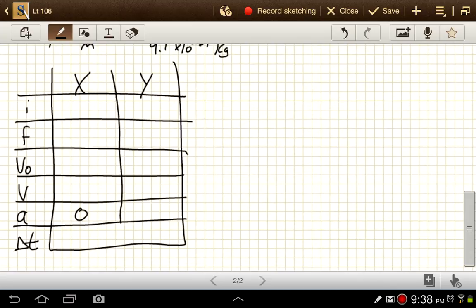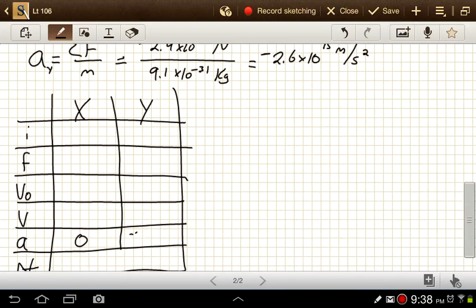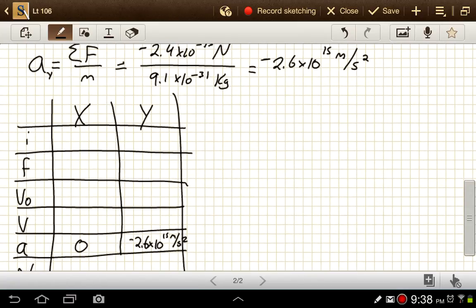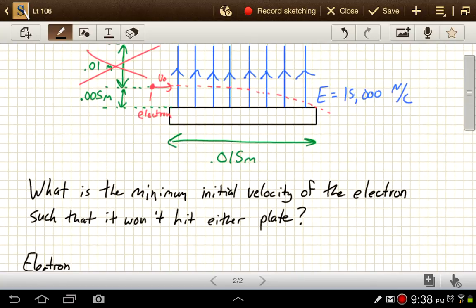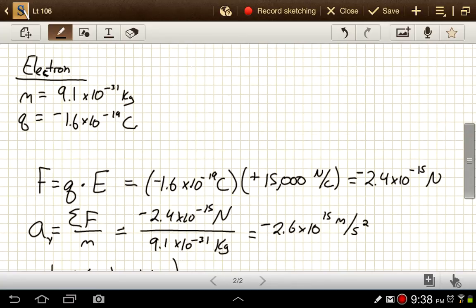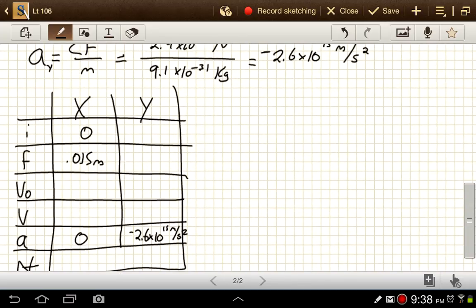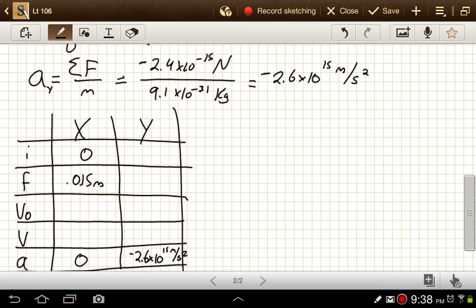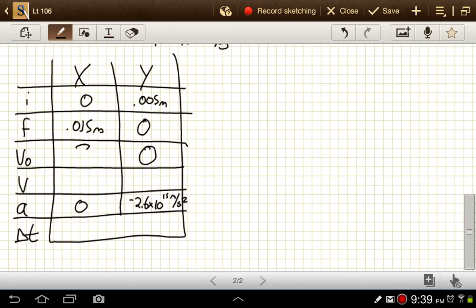Acceleration in the x, we set it with 0. And the y is that negative 2.6 times 10 to the 15th meters per second squared. The initial position in the x, we'll just call 0. And the final position, we want it to just pass by this point right here. So we'll make that 0.015 meters. In the y direction, it starts at some position 0.005 meters above that spot. And we want it to end at zero. Actually, just minutely more than zero. But we'll just call it zero for this. Initial velocity in the y direction is going to be zero. It's just traveling to the right at the beginning. And we want to know what the initial velocity in the x direction is here.